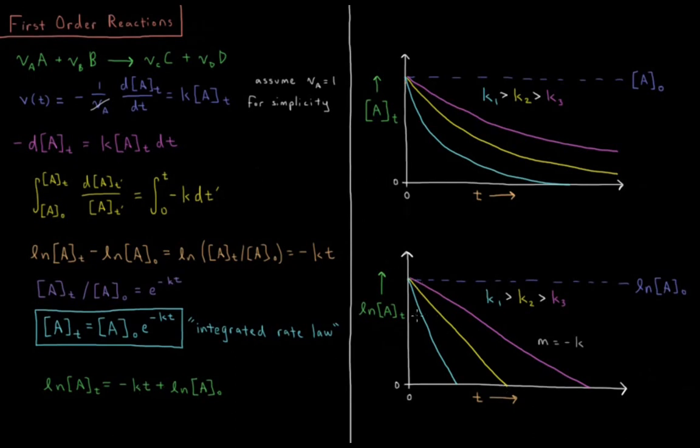And then if you plot the natural log of those concentrations versus time and you get a straight line with a negative slope, then you likely have a first order reaction and the slope of that plot is the negative first order rate constant, k.